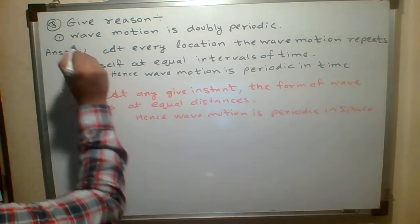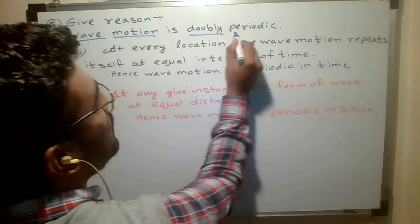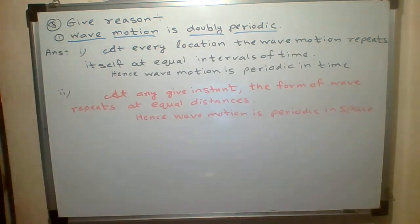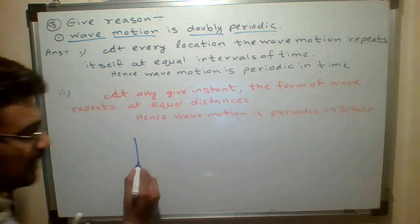Give reason. Wave motion is doubly periodic. Let me draw the diagram as I told you. With the help of the diagram we will understand.